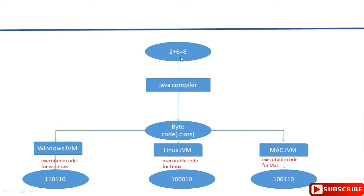Now let's see what happens when we have the same instruction in a Java source file. When we have the same instruction in a Java source file, the Java compiler will not convert this instruction directly into executable code. Instead, the Java compiler will convert this instruction — for example '2 + 6 = 8' — into bytecode. The Java compiler generates a .class file after compiling the source file. It is then the responsibility of the respective platform's JVM to convert this bytecode into machine-understandable language.